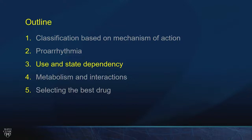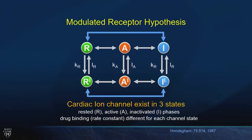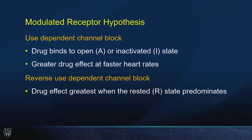The next key idea is use dependency and state dependency — this has a lot to do with how we dose and monitor these drugs. The channels exist in three states: rested, activated, or inactive. Drugs that preferentially bind to recently engaged channels will have more effect at faster heart rates because the more those channels are turning over, the more drug binding you see. That's use dependence. The opposite — drugs that bind during bradycardia — is called reverse use dependence. Use-dependent channel block is commonly seen in sodium channel blockers; the class 3 potassium channel blockers demonstrate reverse use dependence.